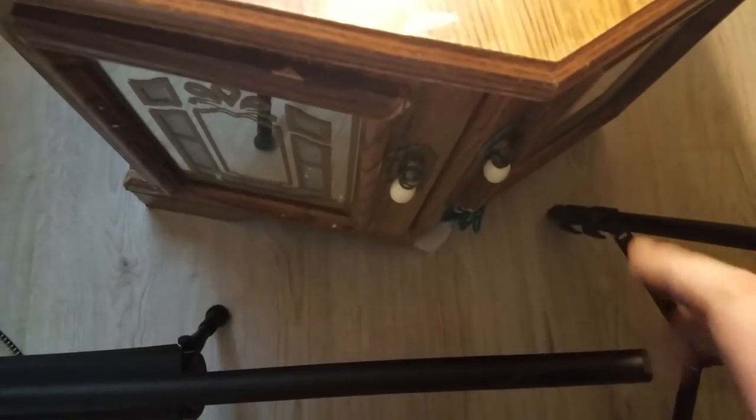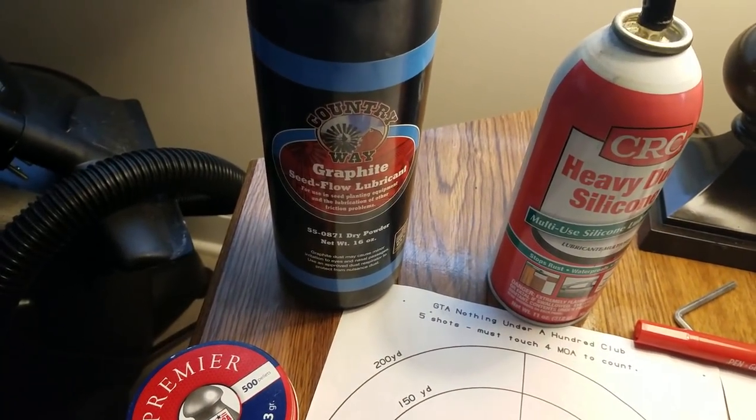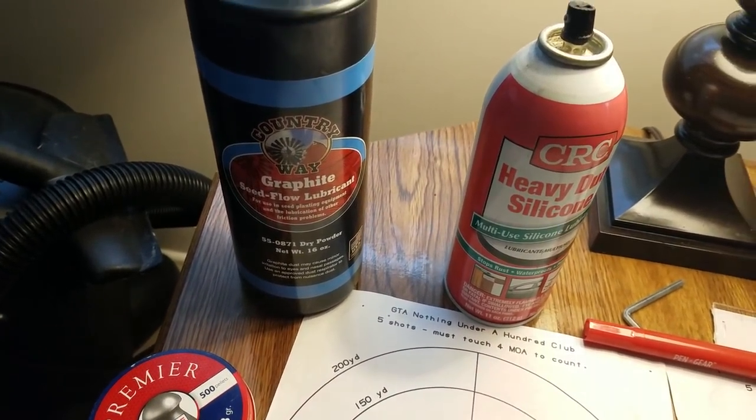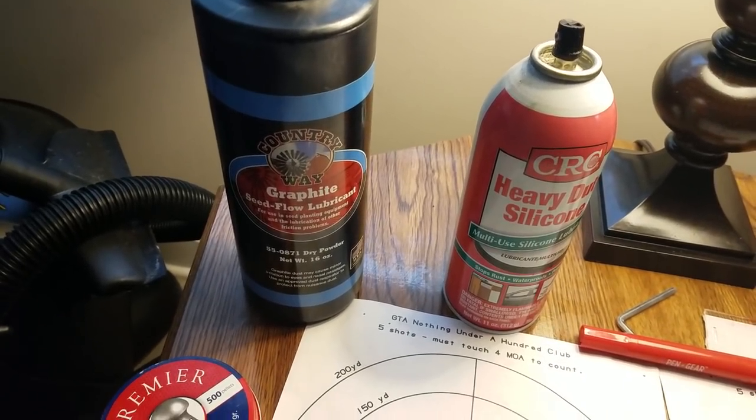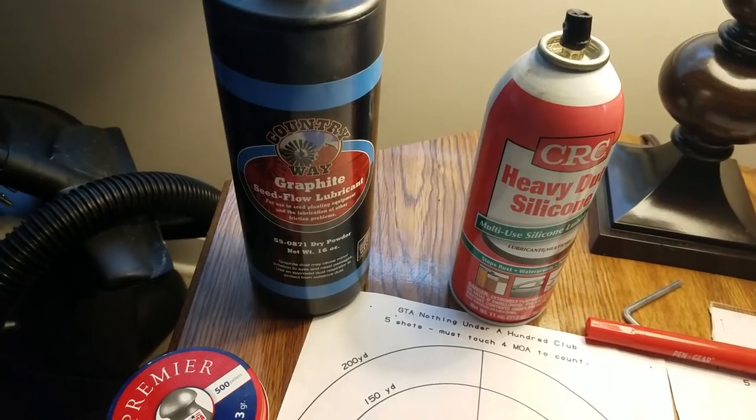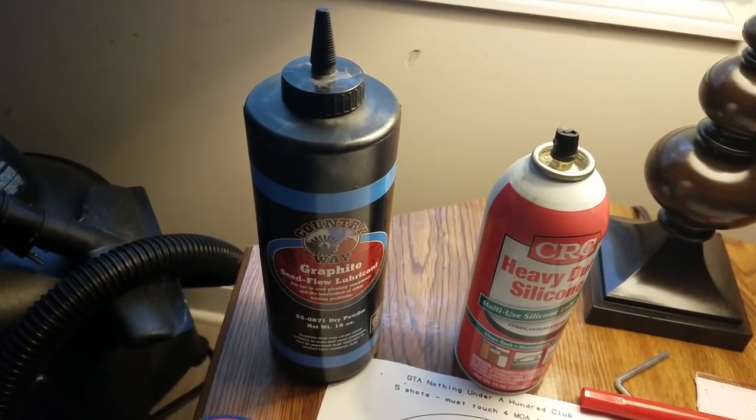And then I bought this. I used to use this on farm equipment, graphite powder. Really inexpensive, it's like four dollars and that's a pound. You got a little nozzle cap there.